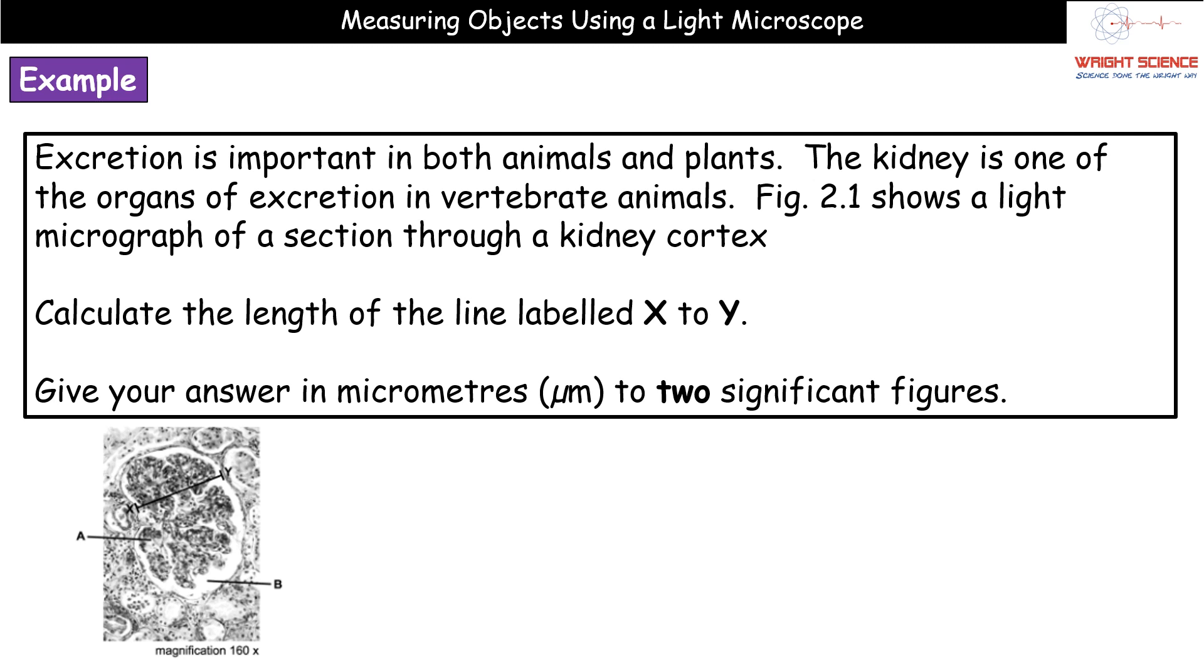This is an example of the kind of question that you can get on the A-level papers about it. First bit is just telling us a little bit of background that relates it to what it actually is. We've got our image and then it tells us to calculate the length of the line labeled x to y and give your answer in micrometers to two significant figures.